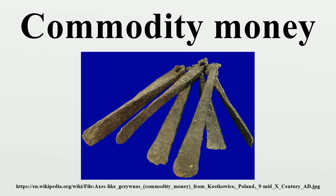Radford documented the way that this cigarette currency was subject to Gresham's law, inflation, and especially deflation. In another example, in U.S. prisons, after smoking was banned in about 2003, commodity money has switched in many places to cans or foil pouches of mackerel fish fillets, which have a fairly standard cost and are easy to store.